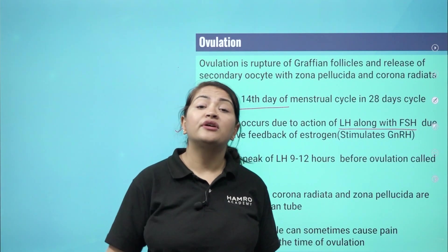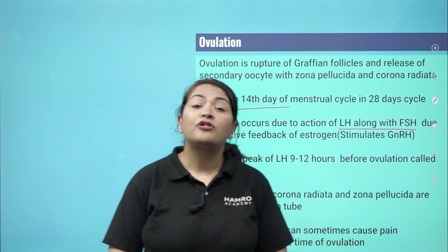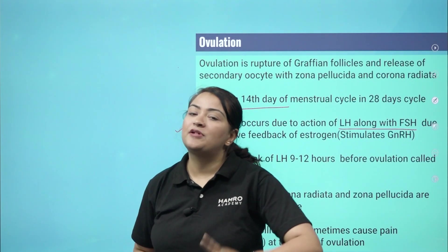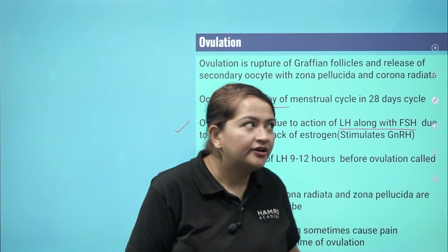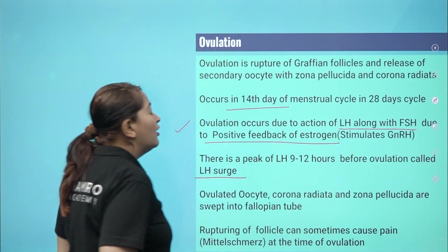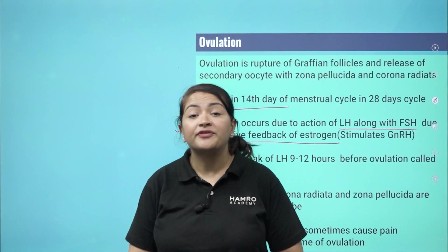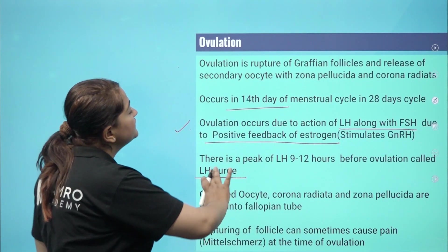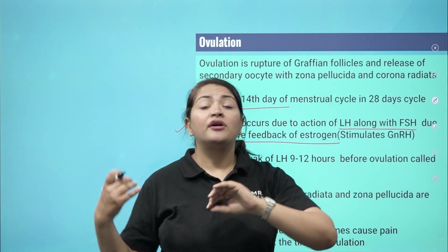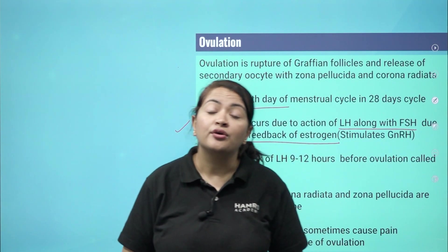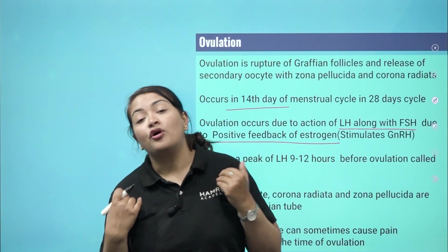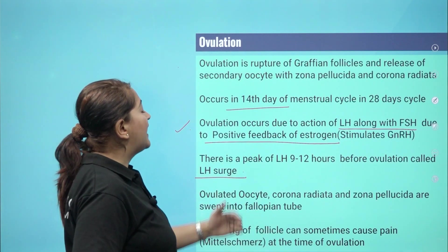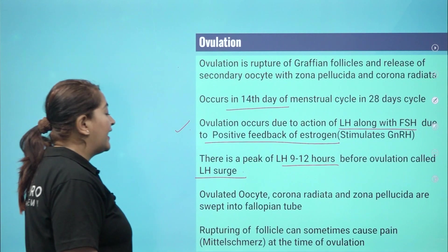Remember: normally the feedback mechanism is negative feedback, but during ovulation it switches to positive feedback. This positive feedback of estrogen occurs only around the time of ovulation, approximately days 12 to 14. The positive feedback of estrogen causes both FSH and LH to be highly elevated.